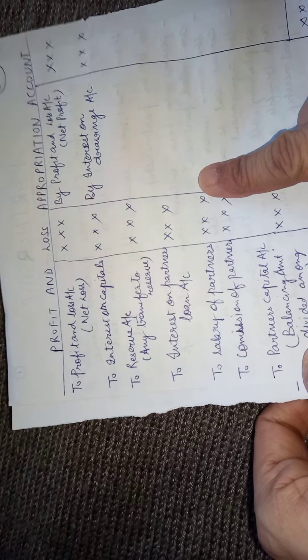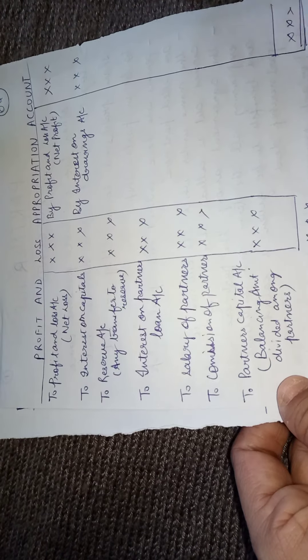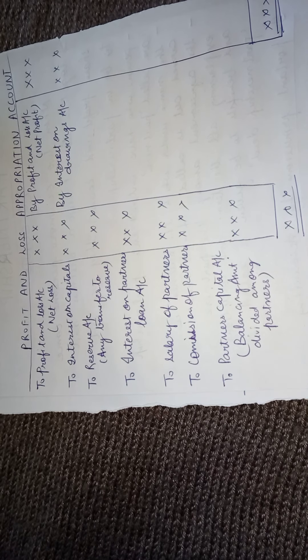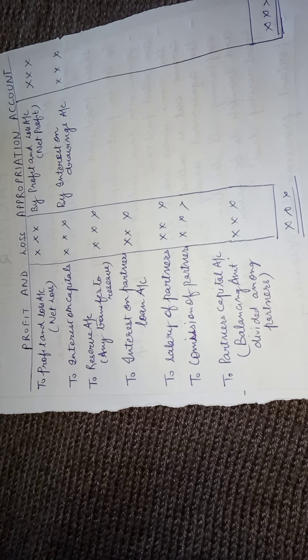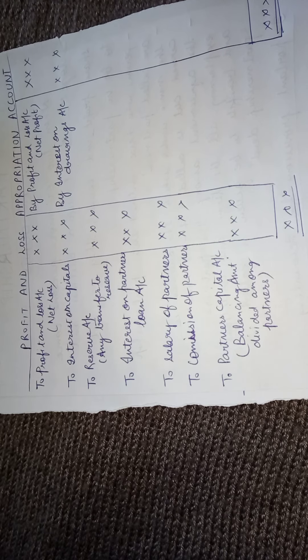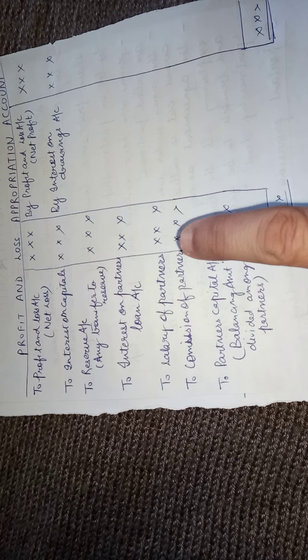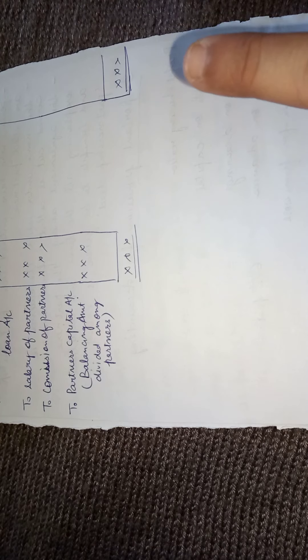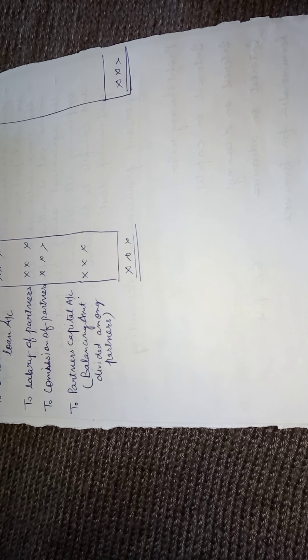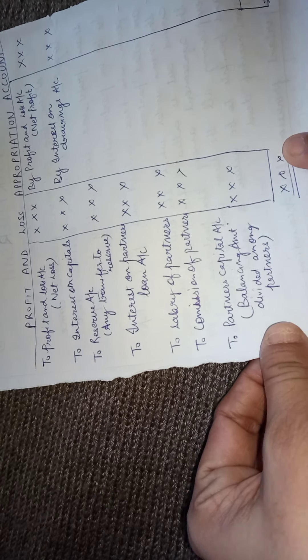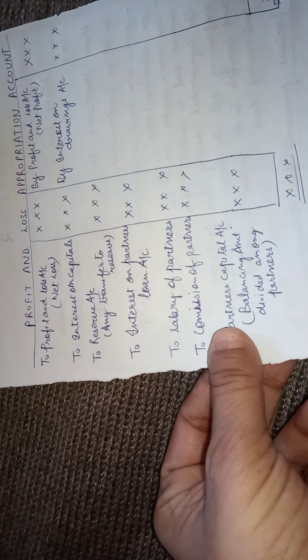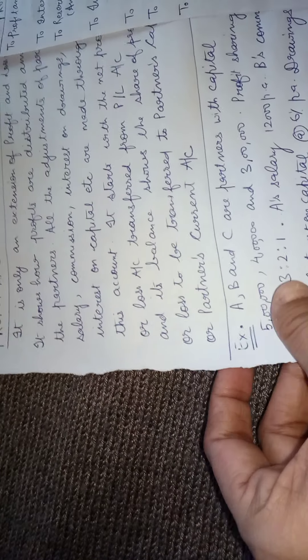So this is the basic proforma of the Profit and Loss Appropriation Account. First, the trading and profit and loss account is prepared, then the balance is transferred to this Profit and Loss Appropriation Account. From here, the balance is transferred to the particular capital accounts of the partners, and then the balance sheet is prepared. This is how the final accounts of a partnership concern are done. Let us do an example to make it more clear.